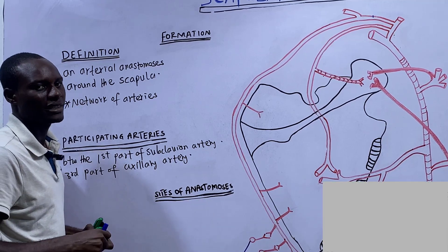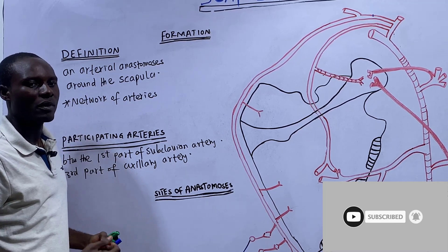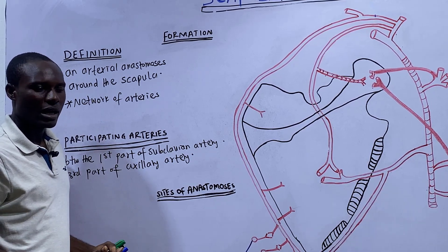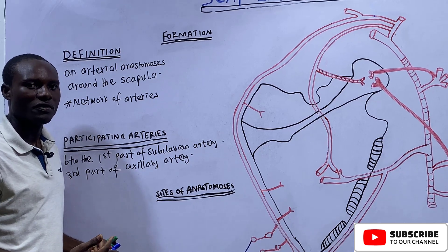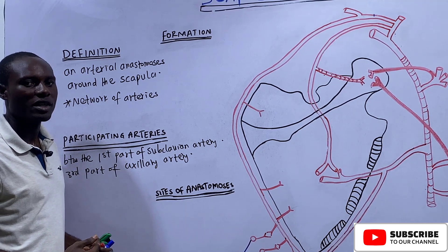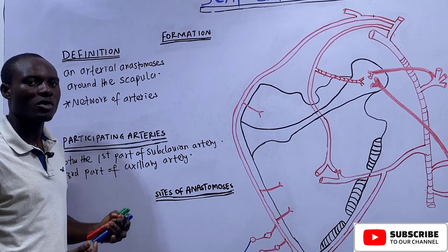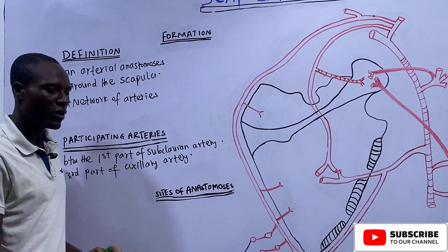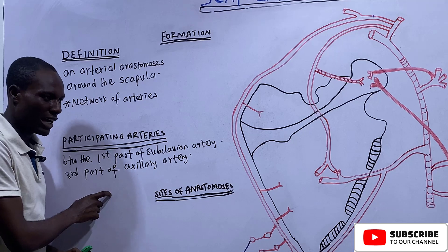We should remember the arterial pathway of the upper limb. The subclavian artery takes its origin either from the brachiocephalic trunk or from the arch of the aorta. The subclavian artery continues as the axillary artery at the outer border of the first rib. The axillary artery continues as the brachial artery at the lower border of the teres major. The brachial artery bifurcates at the neck of the radius into the radial artery and the ulnar artery. So the arteries involved are the first part of the subclavian and the third part of the axillary.